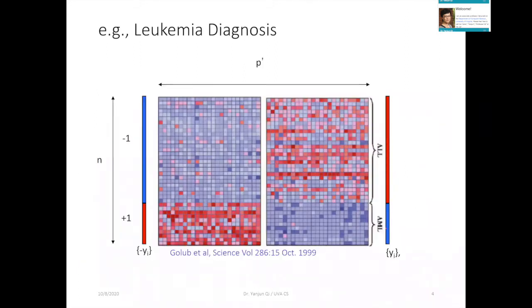Another very classic dataset is the leukemia data, which we discussed when we talked about regression and lasso regression. In this case n is about 100 and p is about 20k — a very classic gene expression / RNA expression-based disease prediction task. It is the norm there that there are just more features than the number of samples.